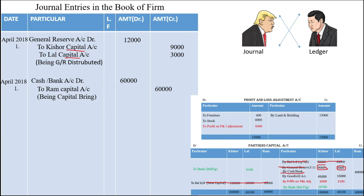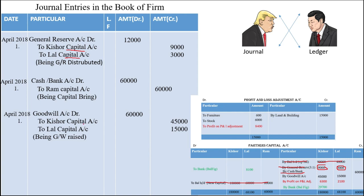Now we go to the goodwill account. The ledger says goodwill is on the credit side, but while passing the journal entry we write it on the debit side — goodwill account debit. For the credit side, goodwill is distributed among Kishore and Lal, so we write: to Kishore capital account, to Lal capital account. The ratio is 3:1. This is our third entry and it is done.